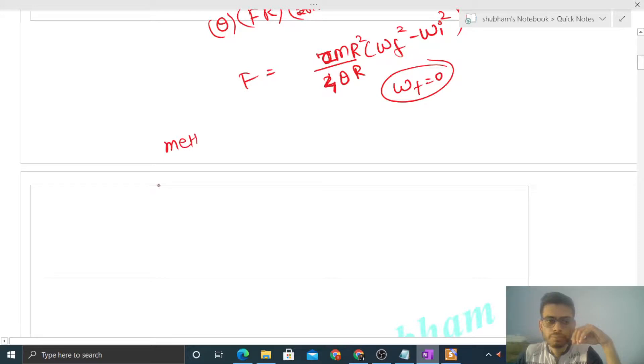We are applying a force on this wheel in the tangential direction, capital F. So what will be the angular acceleration? That is torque upon I. What is torque? Torque is F into R, that is force we are applying times R. Only F's torque will be applied. So this is the value of angular acceleration.